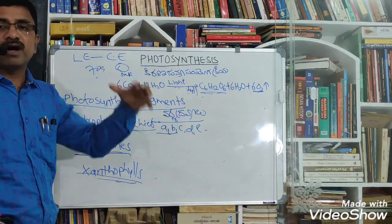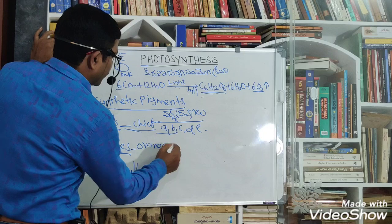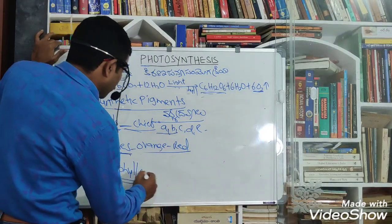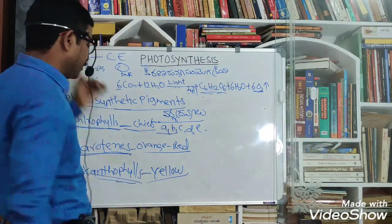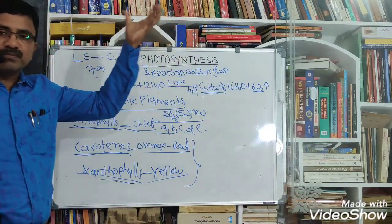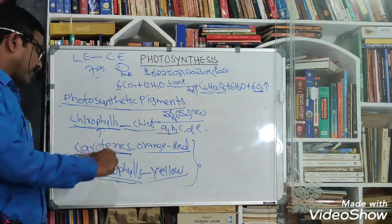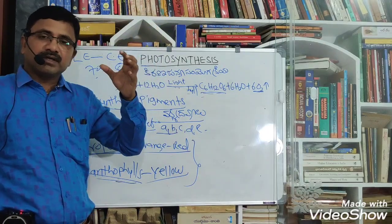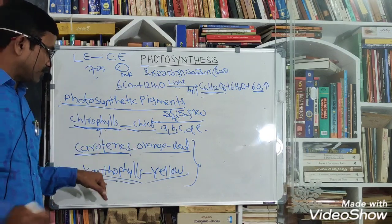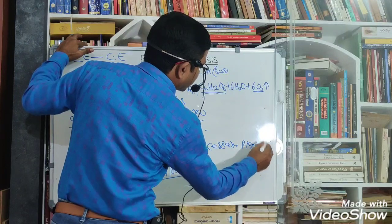Chlorophyll B is found only in highly evolved plants. Next, carotenes — carotenes are orange-red color pigments. There are also yellow color pigments called xanthophylls. Carotenes absorb light energy and transfer that energy to chlorophyll.